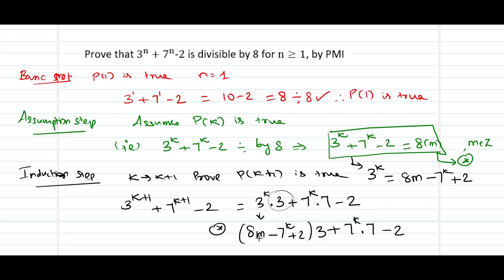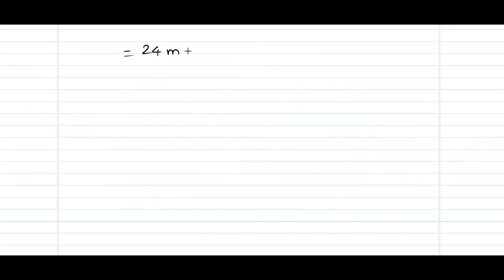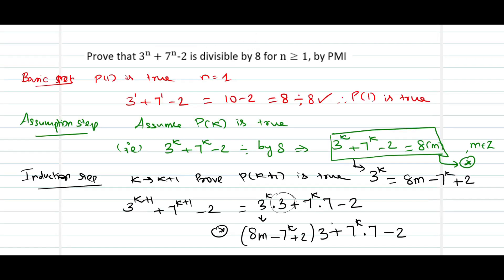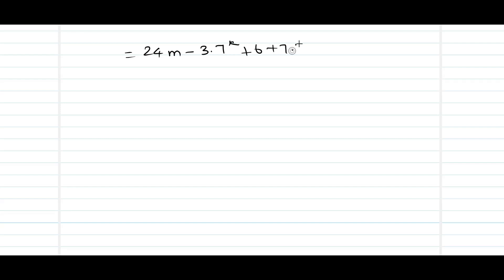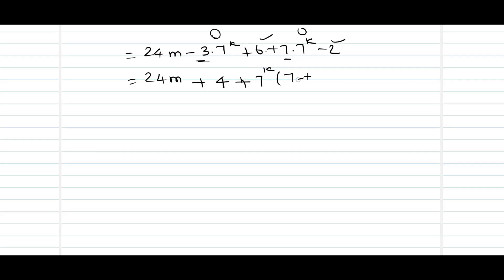Simplifying: 8 times 3 gives 24 times m. Then minus 3 times 7 power k, minus 3 times 2 which gives 6, plus 7 times 7 power k, minus 2. Combining constants gives 24m plus 6 minus 2, which is 4. Combining the 7 power k terms — taking 7 power k outside leaves 7 minus 3, giving 4. So the next stage is 24m plus 4 plus 7 power k times 4.